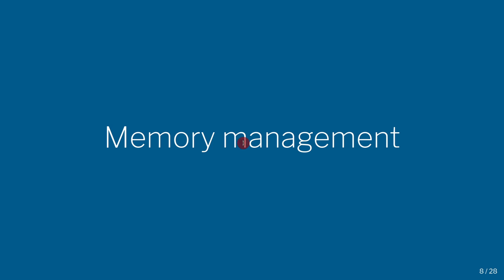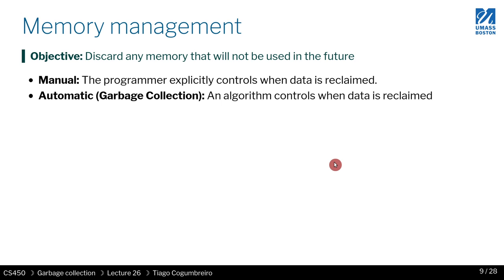Welcome to memory management — that's where these questions are answered. If you have any kind of programming language, either you offer manual memory management, such as malloc and free, or you have some sort of automatic memory management. In manual, the programmer has explicit control over when and which data is reclaimed. In automatic — the other end of the spectrum — you have algorithms that take care and control of everything. Many programming languages, like C, allow you to do manual but also have some libraries that can do a kind of automatic garbage collection on a subset of the memory.